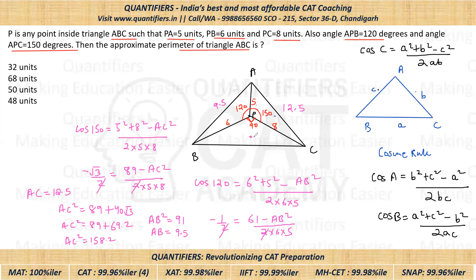Now triangle PBC is a right-angle triangle (angle BPC = 90°, PB = 6, PC = 8). So we can apply the Pythagorean theorem: BC² = 6² + 8² = 36 + 64 = 100, so BC = 10. The approximate perimeter = AB + AC + BC = 9.5 + 12.5 + 10 = 32. So 32 is the correct answer.